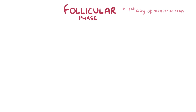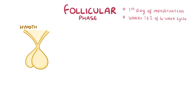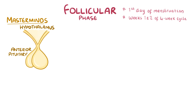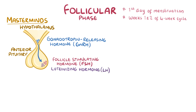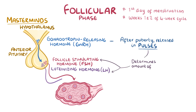The follicular phase starts on the first day of menstruation and represents weeks 1 and 2 of a 4-week cycle. The whole menstrual cycle is controlled by the hypothalamus and the pituitary gland. The hypothalamus secretes gonadotropin-releasing hormone, or GnRH, which causes the anterior pituitary gland to release follicle-stimulating hormone, or FSH, and luteinizing hormone, or LH. Before puberty, GnRH is released at a steady rate, but once puberty hits, it is released in pulses. The frequency and magnitude of these GnRH pulses determine how much FSH and LH will be produced by the pituitary.